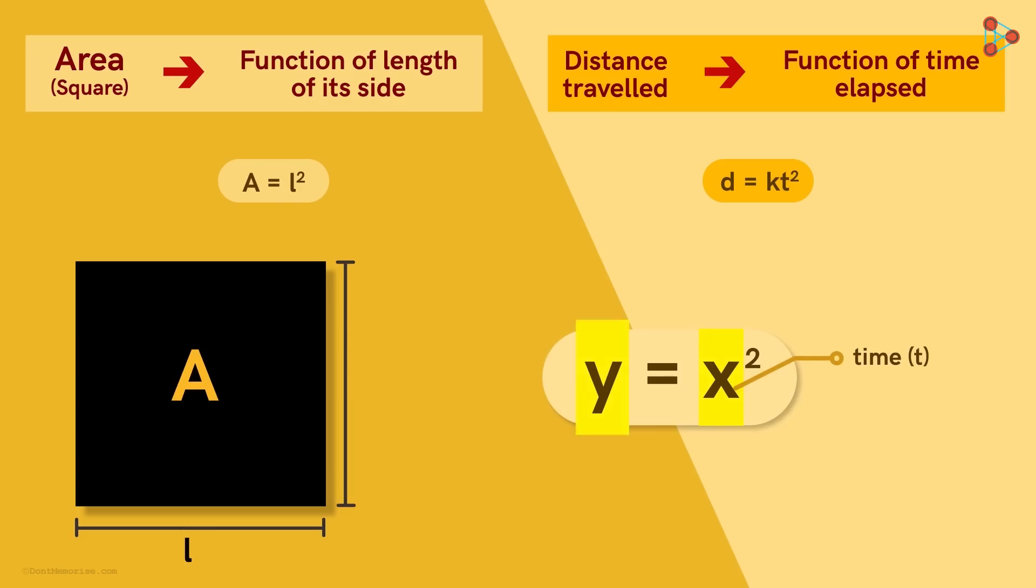Here, X can be the time and Y the distance. Or, X can be the length of the square's side and Y the area.